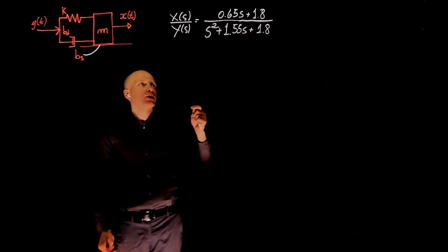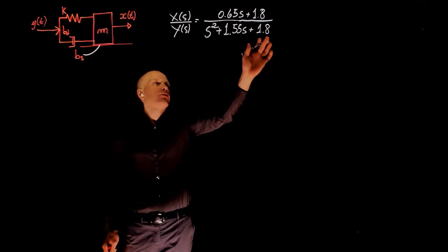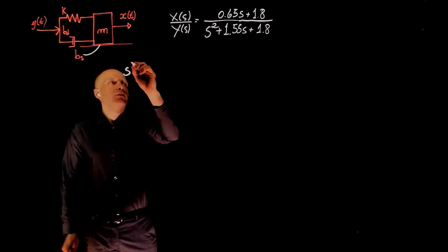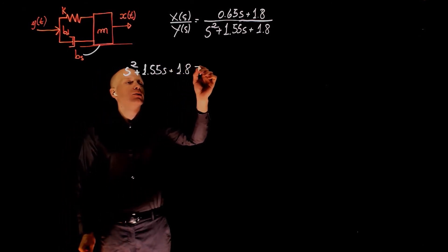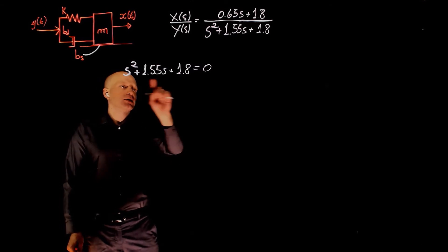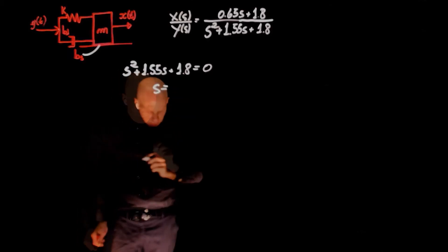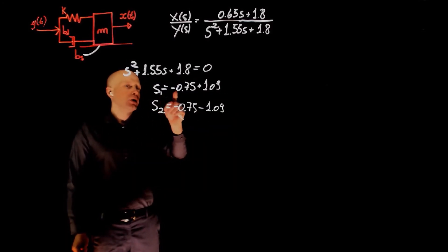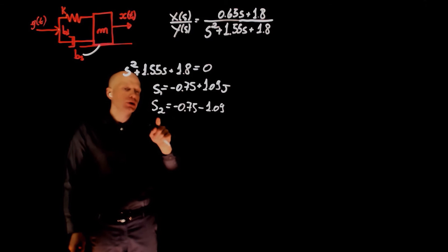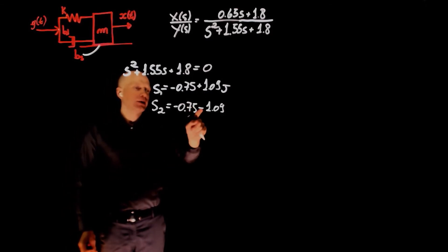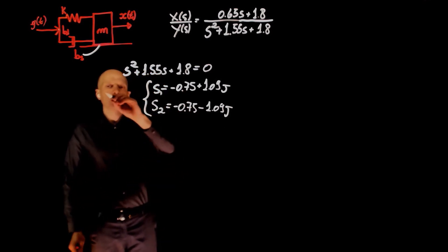Now having a transfer function also allows us to specify the poles and zeros of that transfer function. The poles are defined as the values of s that will make the denominator 0. By doing s squared plus 1.55 s plus 1.8 equals 0, the values of s that satisfy this expression are the poles. And those are s1 equals negative 0.75 plus 1.09 j, a complex root. And s2, the complement of that, negative 1.9 j. The real part is the same. So those are the poles.